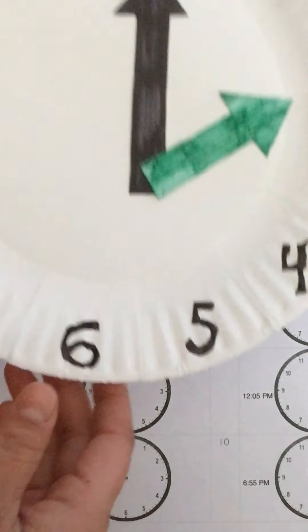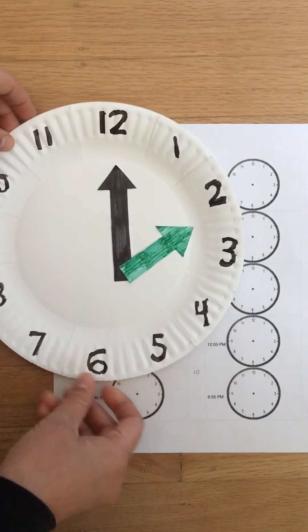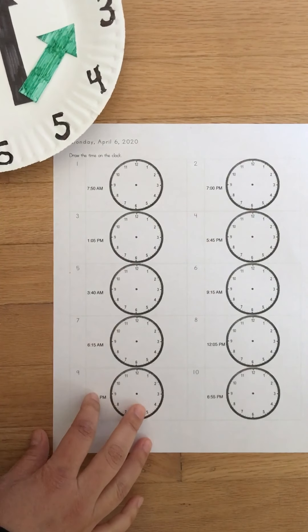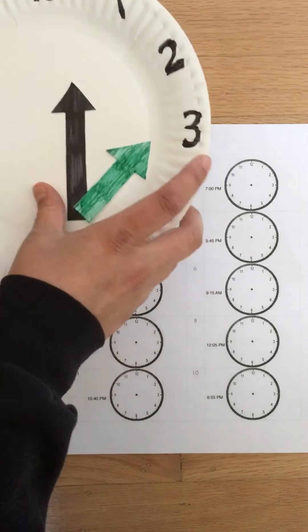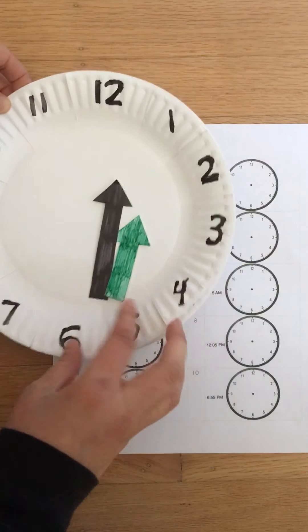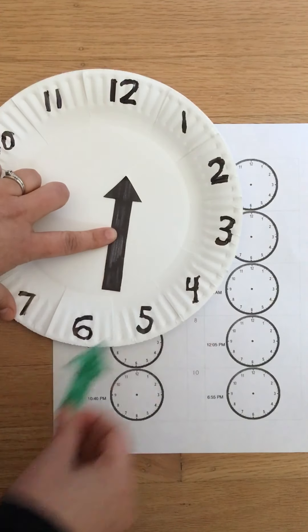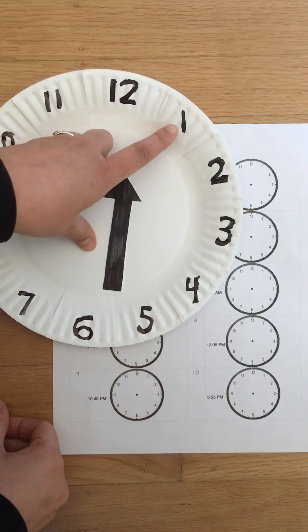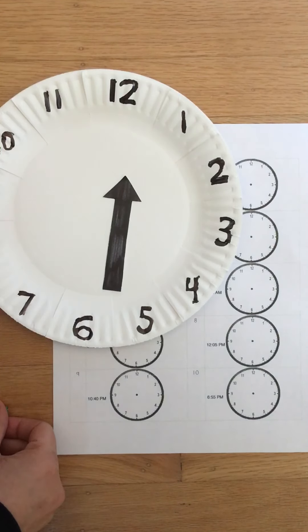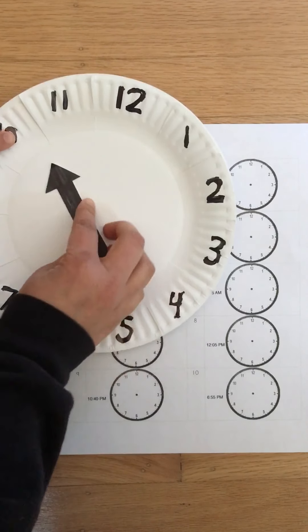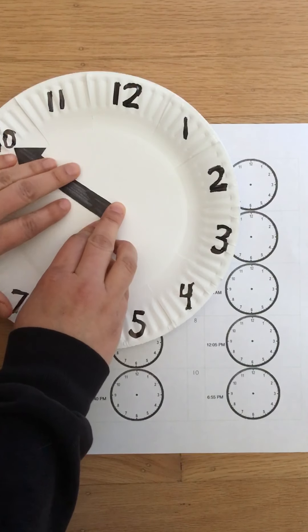I'm going to use my helper clock here. I'm going to start with the minutes. 50. So 50 minutes. My minutes are underneath. I count by 5 to figure out where my minute hand would show. 5, 10, 15, 20, 25, 30, 35, 40, 45, 50. My minute hand is going to point to the 10 for 50 minutes.